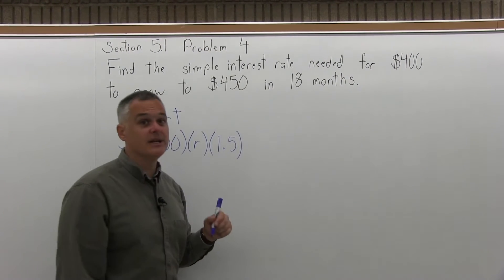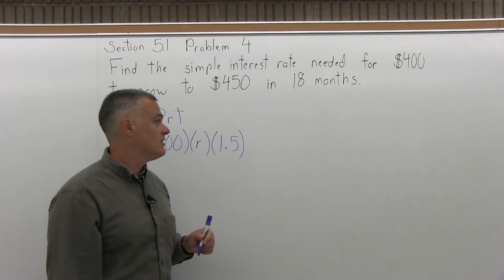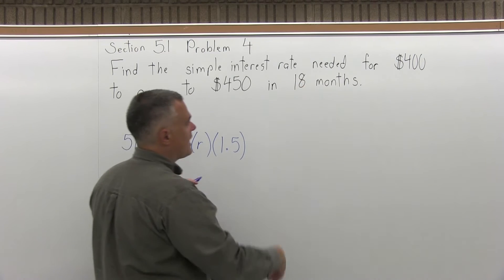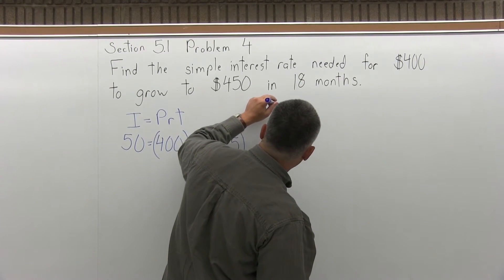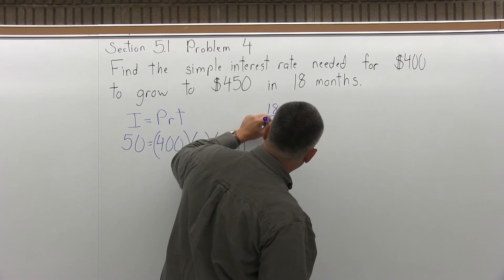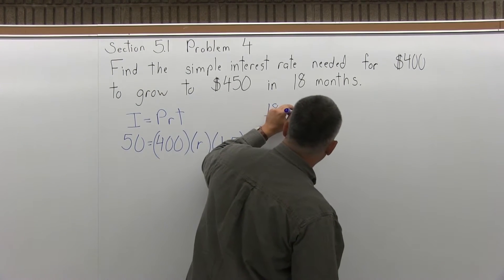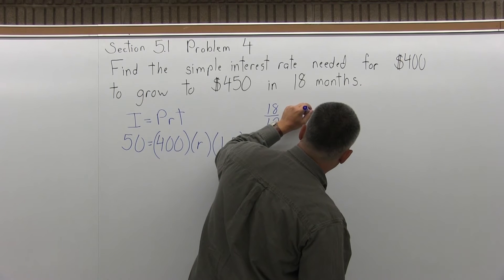Now if you put 18 in the formula, the formula will think you want it in 18 years and you get a very different answer. I happen to know off the top of my head that 18 months is a year and a half, but if you don't happen to know that,